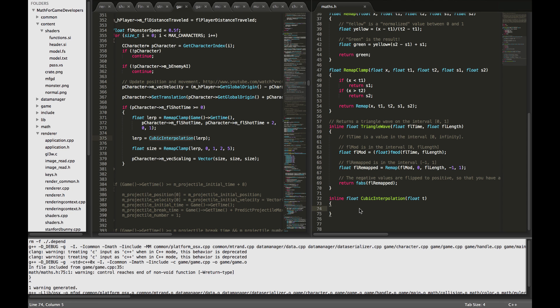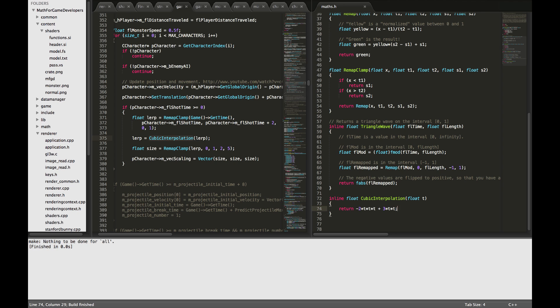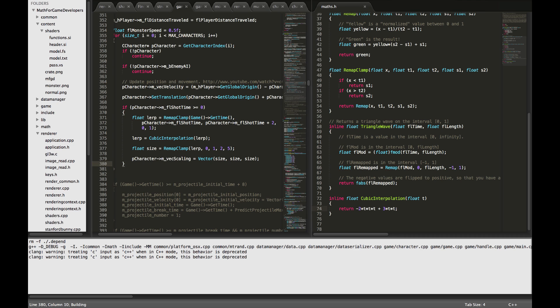So here's where the cubic interpolation function is defined. Let's go ahead and write it. We're going to say negative 2 times t cubed, I'm just going to write t times t times t for t cubed, and then we're going to add 3 times t squared. That's it. So we've written a very simple cubic interpolation function that does smoothing instead of a jerky transition. It's still an interpolation but it's no longer linear, it's now cubic.